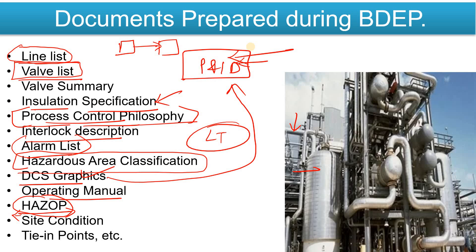The Site Condition Document is an initial document and also very important. There could be other documents as well, such as the Hold Point List, but these are the major documents prepared during the Basic Design Engineering Package. After BDEP, the detail engineering phase comes into the picture.